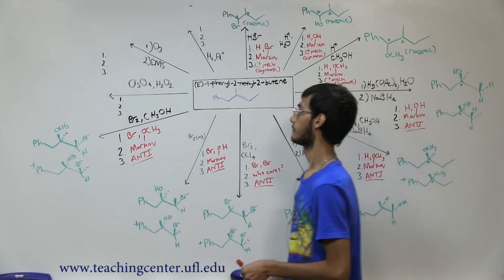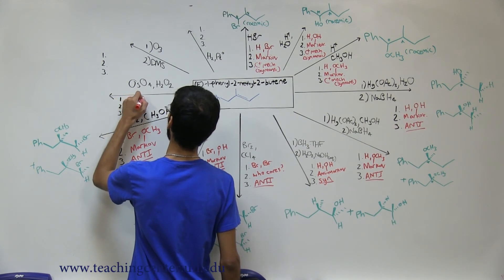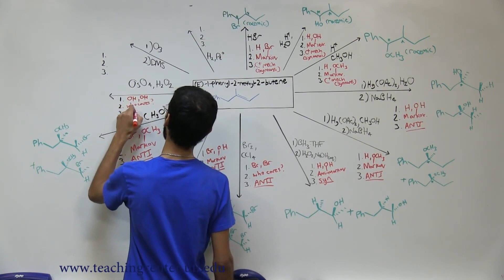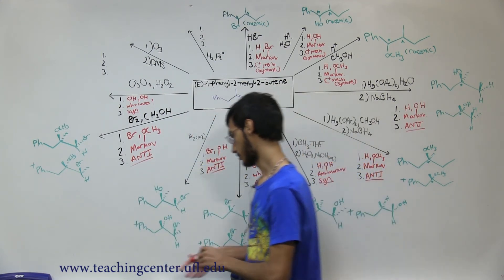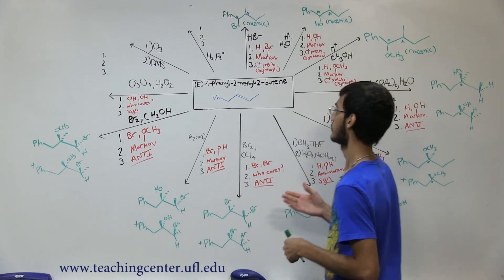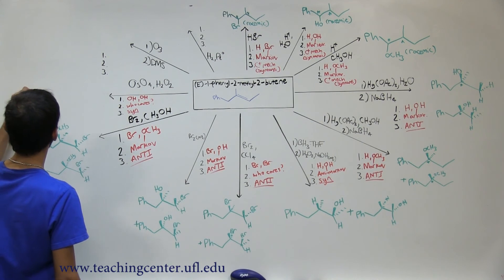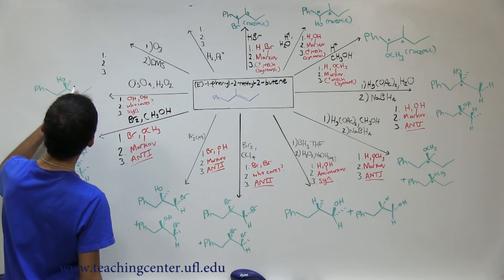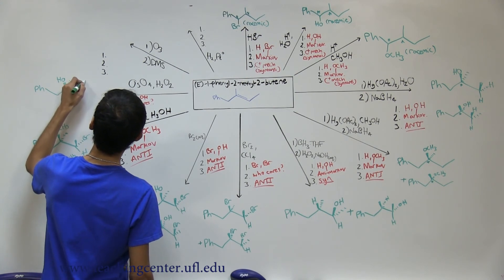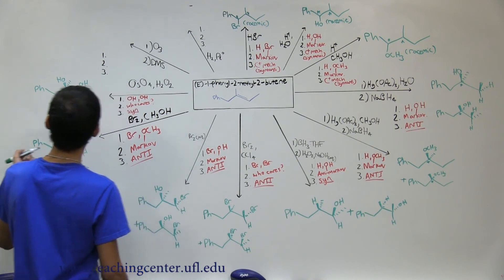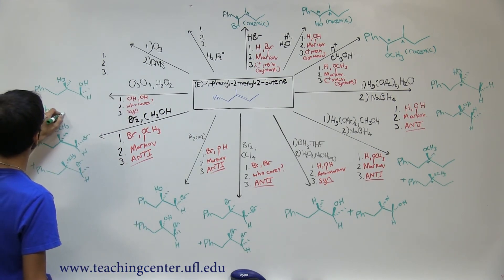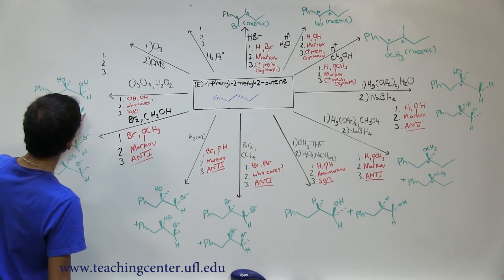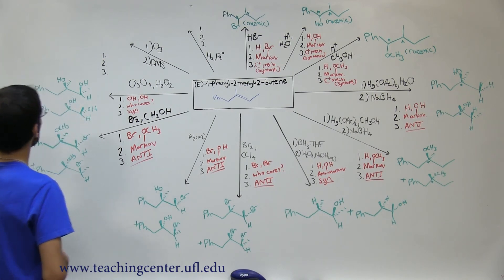The next reaction is diol formation. This adds OH and OH; regiochemistry is 'who cares' since we're adding the same thing; and it's syn addition. We add both OHs to the same side. First product: both OHs add up — one up on each carbon. Second product: both OHs add down. Those are your two syn-addition products from diol formation.